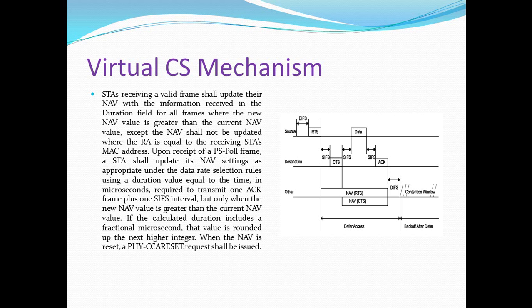Upon receipt of a PS-Poll frame, a station shall update its NAV settings using the duration value equal to the time in microseconds required to transmit one ACK frame plus one SIFS interval, but only when the new NAV value is greater than the current NAV value. If the calculated duration includes a fractional microsecond, the value is rounded up to the next higher integer. When the NAV is reset, a physical CCA reset request shall be issued with the hardware of the device.